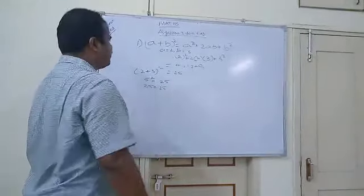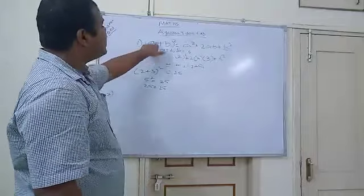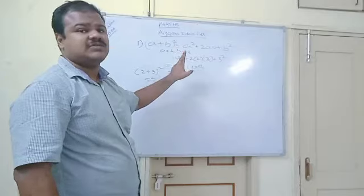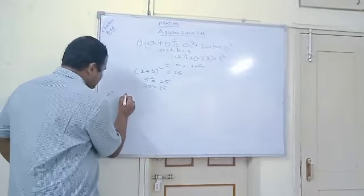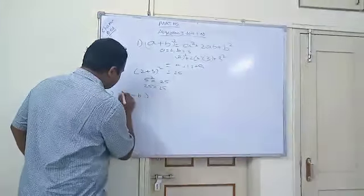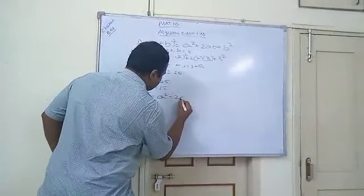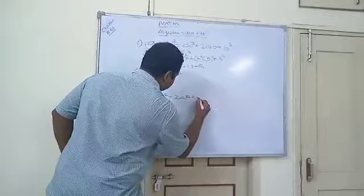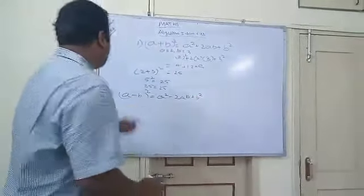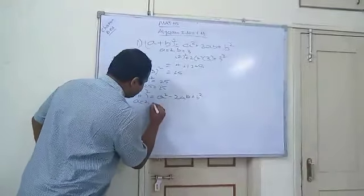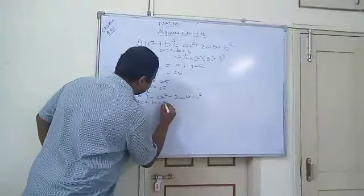Next identity, let us discuss the second one. This formula satisfies each and every expression. You can take anywhere you can satisfy. Coming to next formula, A minus B whole square. A square minus 2AB plus B square. Suppose, take A is equal to 3, B is equal to 2.